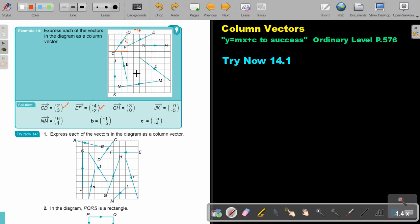And then the next one, GH. It's only a horizontal movement. So it's 1, 2, 3, that's 3, 0, no vertical movement.